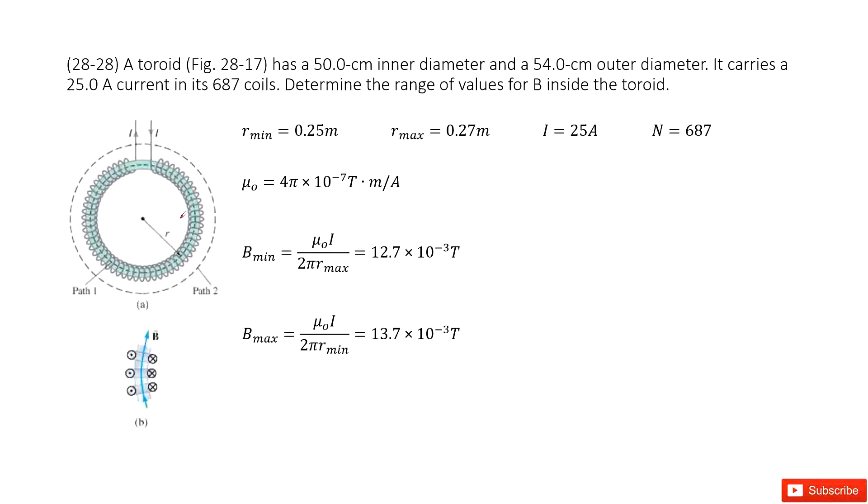We have this toroid. We know the inner diameter and outer diameter. We know the current and how many turns for this toroid. The problem asks about the magnetic fields at the center, the range.